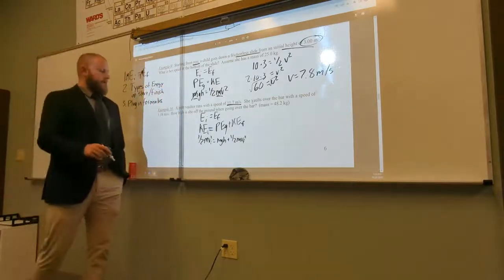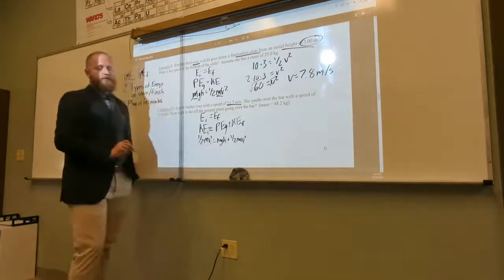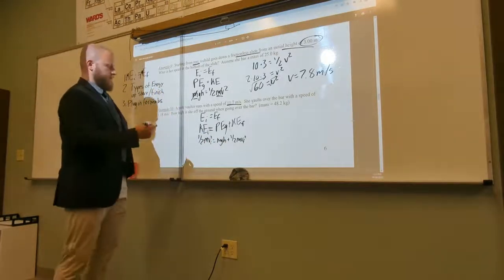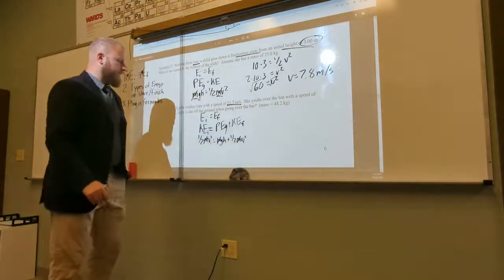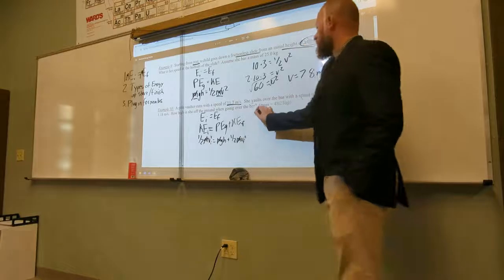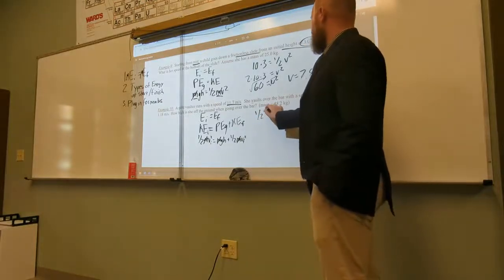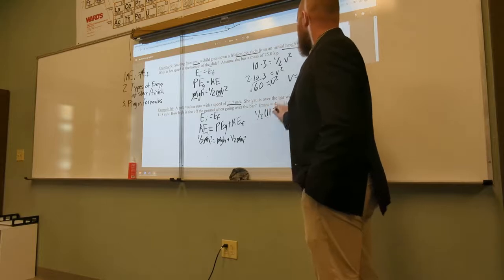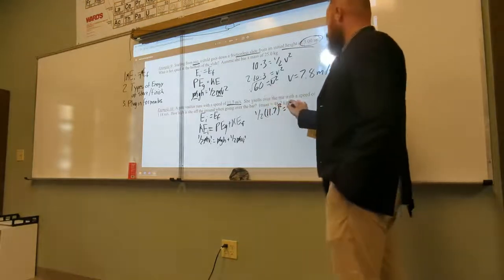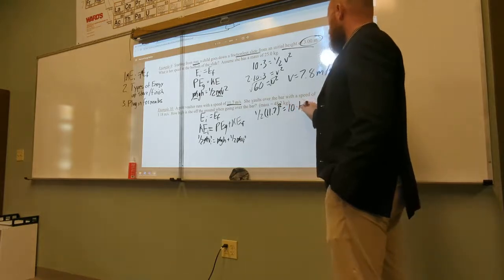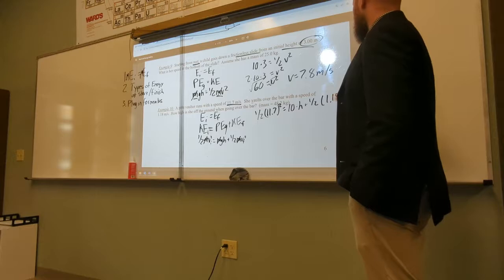Now, let's go ahead and think about this. I have m in every single term, so what can I do? Yes. I can cancel out my m. Now, I have one-half. My initial velocity is 11.7. I'll square that. Equals g, which I'm going to round to 10. Times h, which is what I'm looking for. Plus one-half, one-point-one-eight squared.